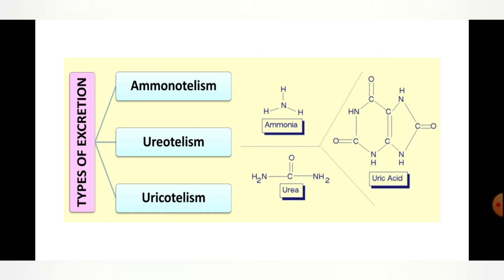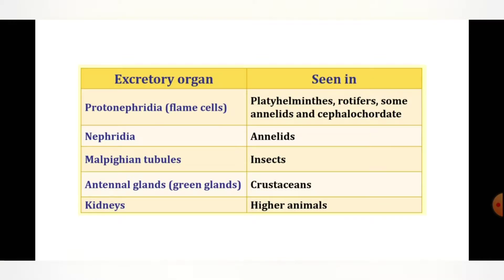Organisms which show ammonotelism are called ammonotelic organisms, those which show ureotelism are called ureotelic organisms, and those which show uricotelism are called uricotelic organisms. Here you can see the structure of ammonia — one nitrogen and three hydrogen atoms (NH3) — and also the structures of urea and uric acid.